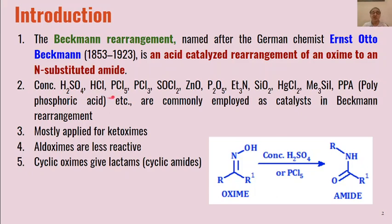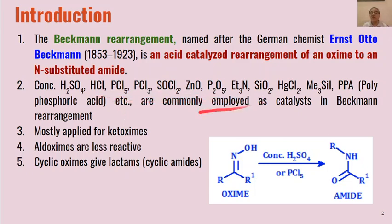The most commonly used acids for this conversion include concentrated sulfuric acid, HCl, phosphorus pentachloride, phosphorus trichloride, thionyl chloride, zinc oxide, P2O5 (phosphorus pentoxide), triethylamine, SiO2 (silicon dioxide), mercuric chloride, trimethylsilyl chloride, and polyphosphoric acid. These are some of the commonly employed catalysts in Beckman rearrangement, and in addition, many more catalysts have been reported in recent years.